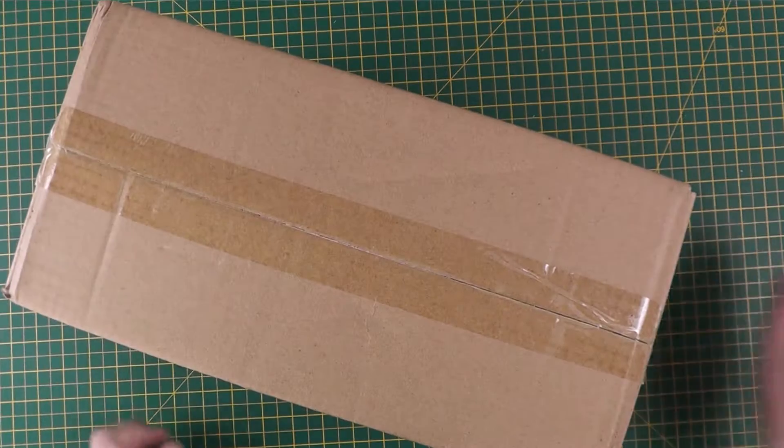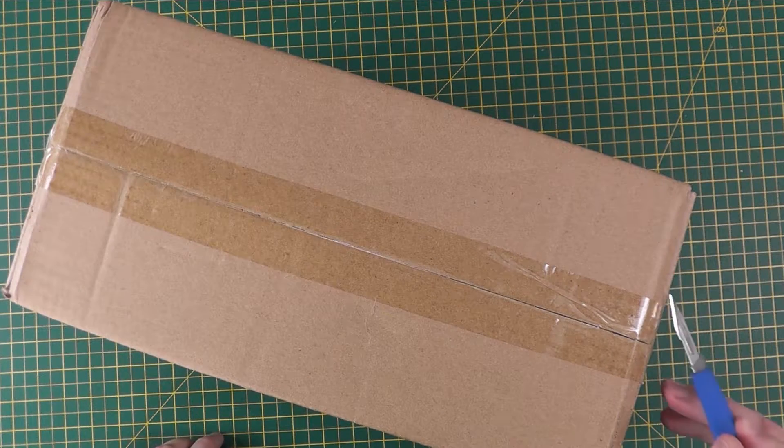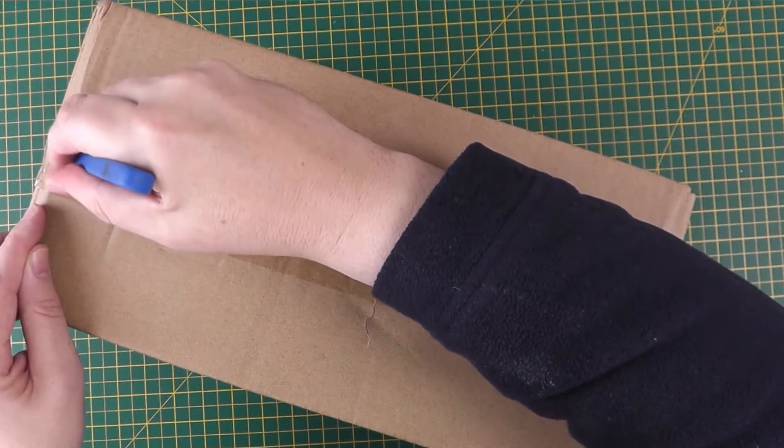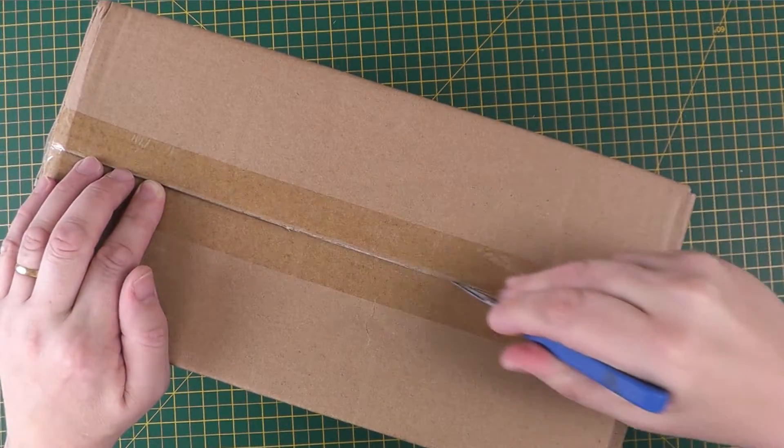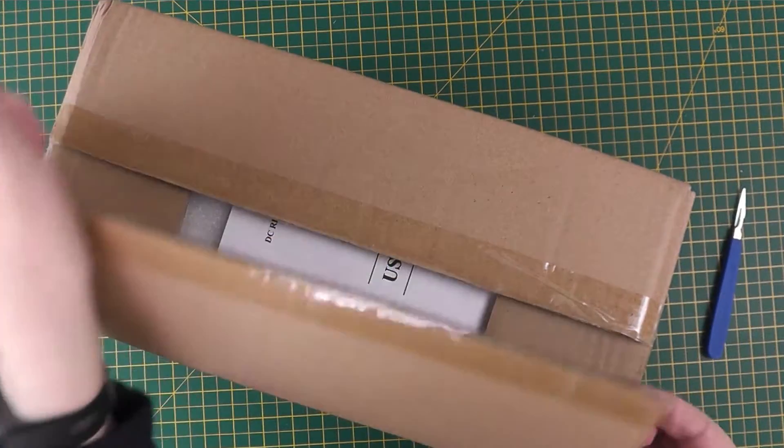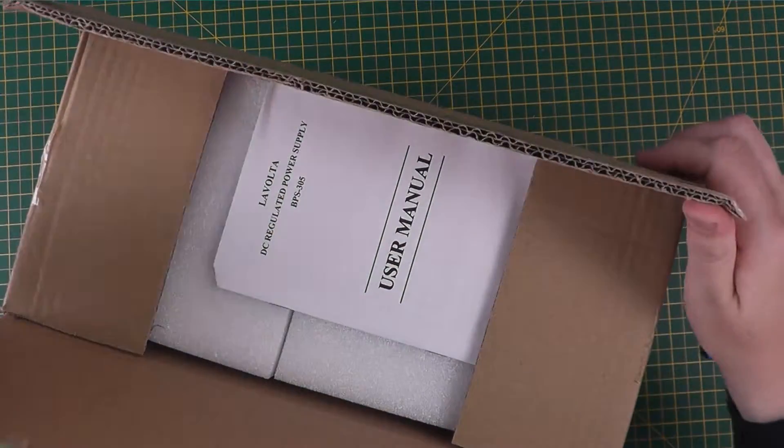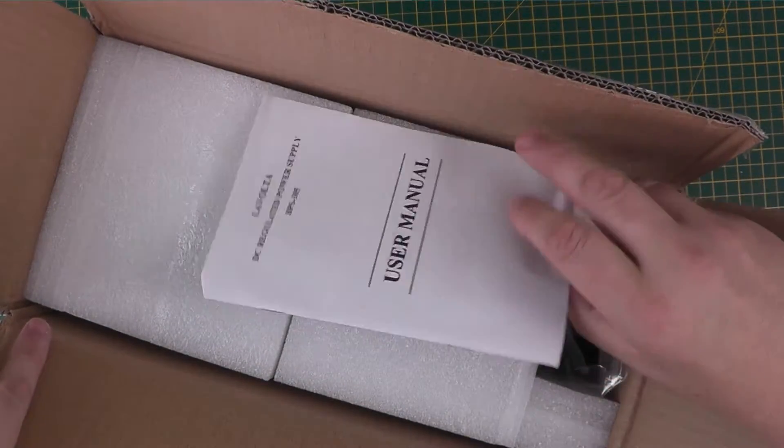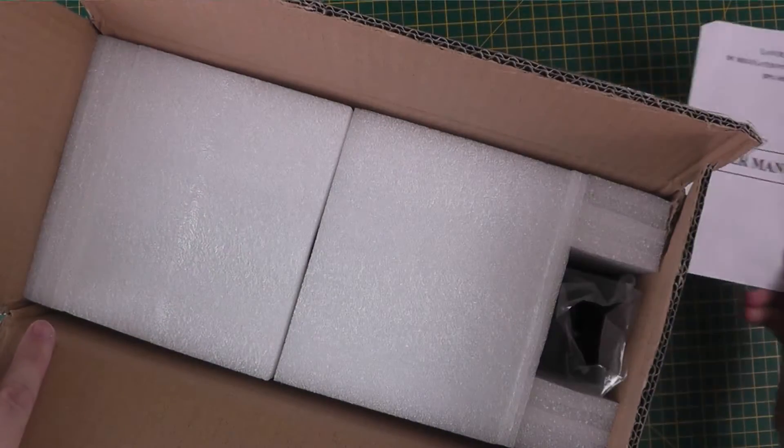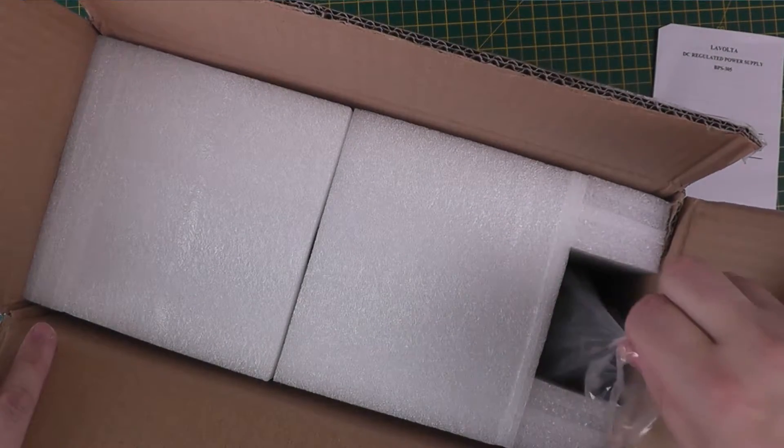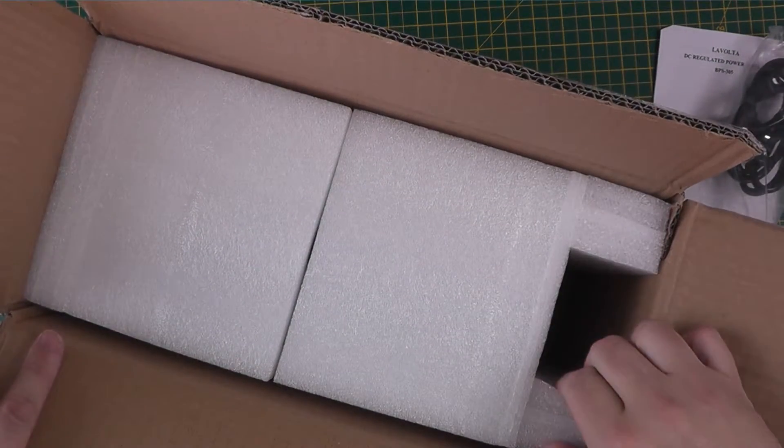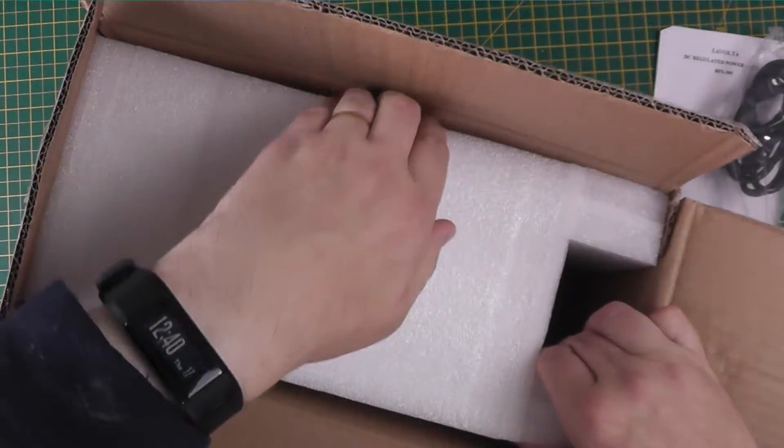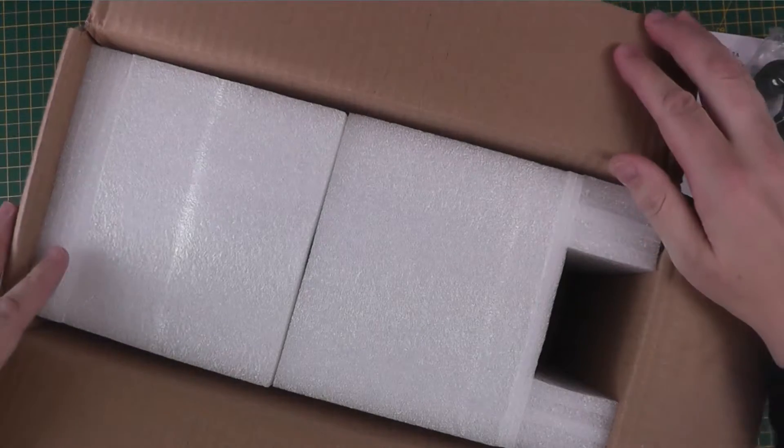Here we have the box, let's get a knife and open up and see what's inside. So first off we have the generic Chinese user manual, power cord, all right let's tip it back.